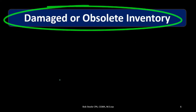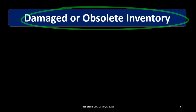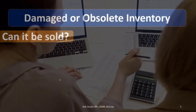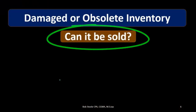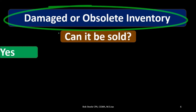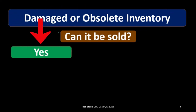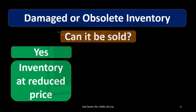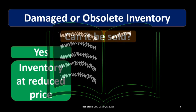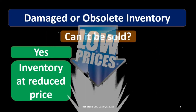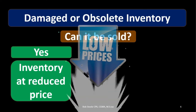If we have damaged or obsolete inventory, we need to determine what can be done with it. If the inventory can still be sold, we include it in inventory but at a reduced price using the conservatism principle — we do not want to overstate our books. We record it at the lower realizable price, specifically the net realizable value we could obtain on the market.